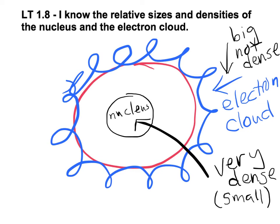So again, the electron cloud is big but not dense. The nucleus is very dense, but it's small.